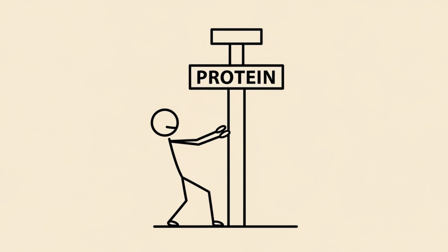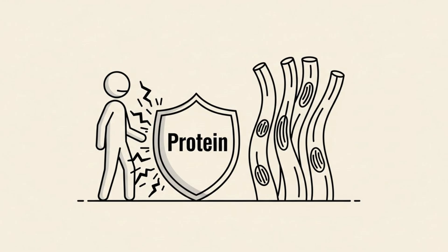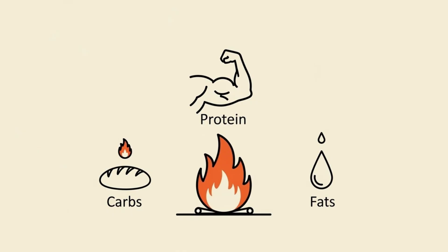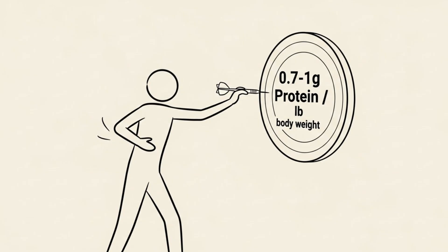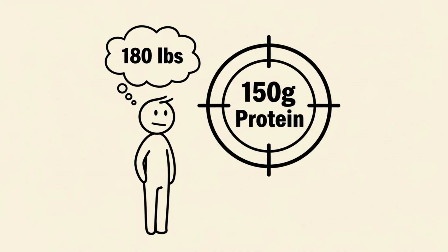Protein is the most important lever you can pull. It protects your muscle tissue while you are in a deficit. It also has the highest thermic effect of food, meaning your body burns more calories digesting protein than it does carbs or fats. Aim for 0.7 to 1 gram of protein per pound of body weight. If you weigh 180 pounds, shoot for roughly 150 grams of protein.